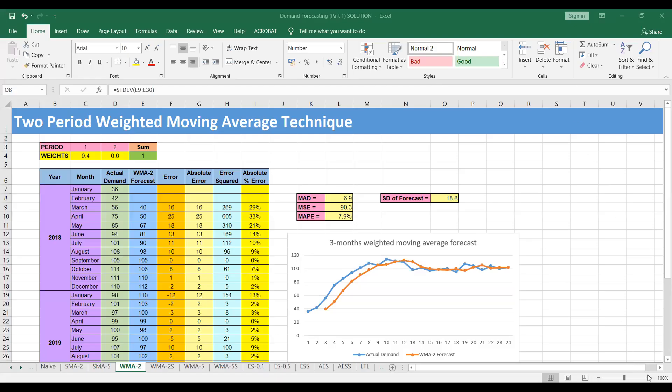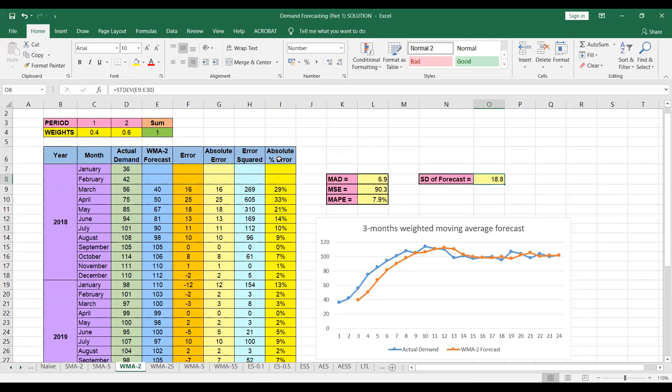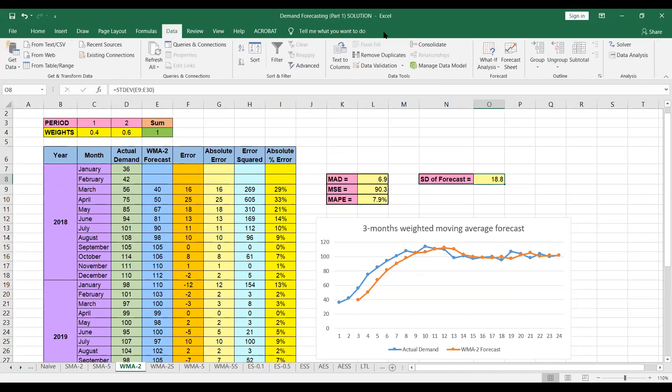So I have applied the formulas for MAD and MSE and MAP and these are the values that I have obtained. Now the question is, are these the optimum values for the weights? I'm not sure. So let's ask Excel if these are the optimum values or not. So on the data tab, there is an option of solver on the right most corner. So we click solver.